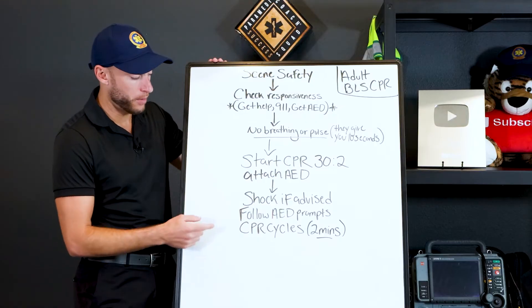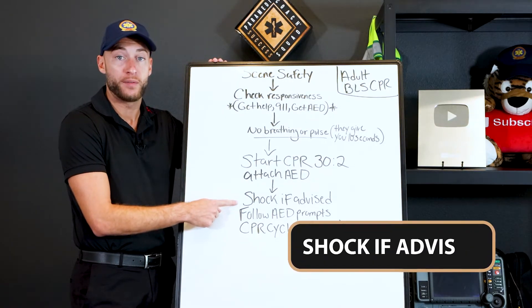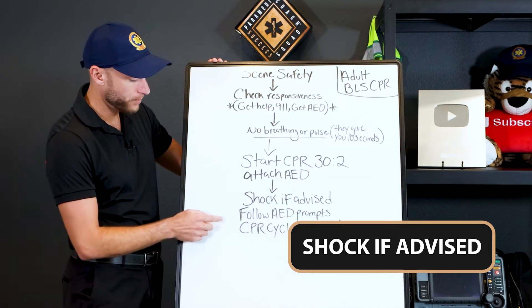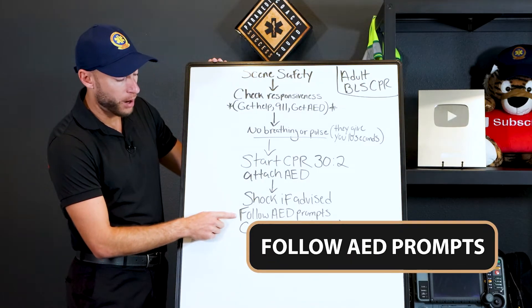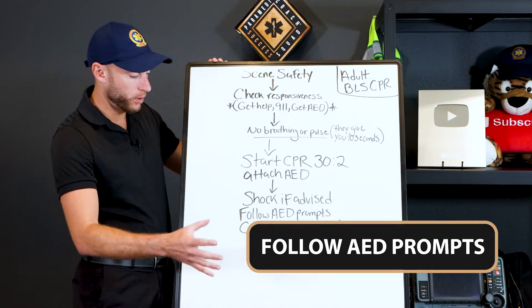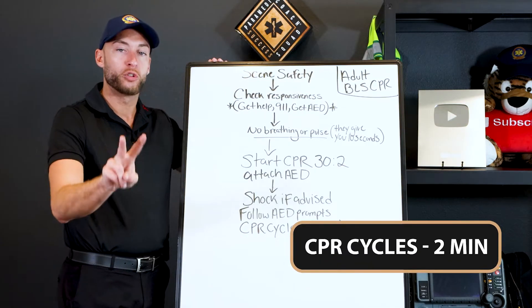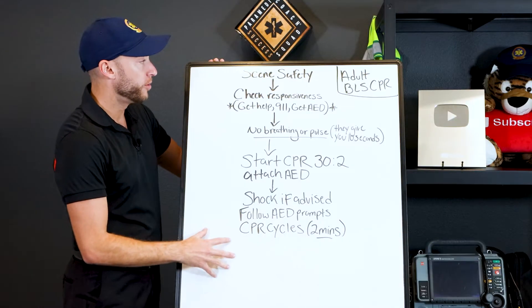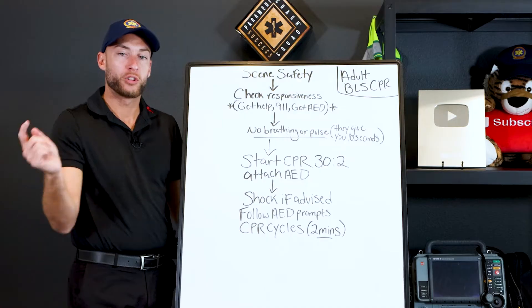So what did I write down here, the key things to remember. Obviously you're gonna follow the AED prompts and shock if advised, providing one shock and then continuing your CPR. The AED is kind of helping us run this code. And then remember your CPR cycles, how long? They're 2 minute cycles of CPR. If you have all this down, you're on your way to passing BLS.